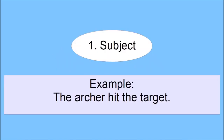The first way to start a sentence is with the subject. Examples are: the archer hit the target, or it was great, or a car drove by the house. If you just use these kinds of sentences, it will get monotonous fast. So we need ways to mix it up.